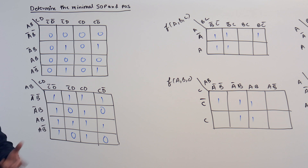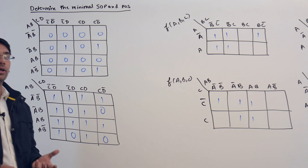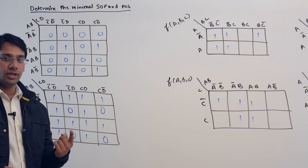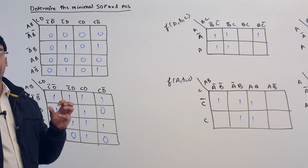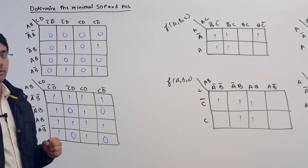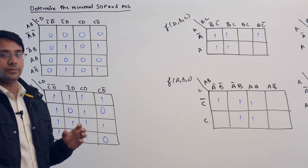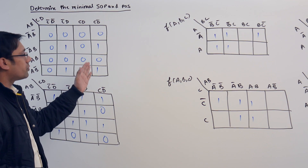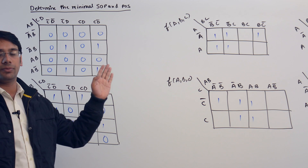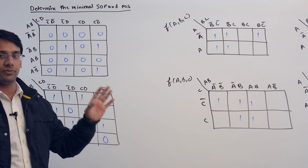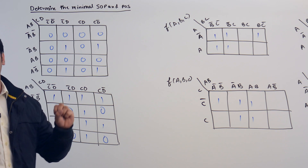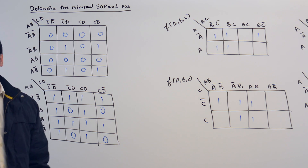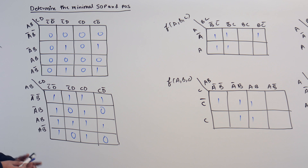Whenever we are finding SOP, that means we are going to take all the one terms. SOP is Sum of Product and POS is Product of Sum. Whenever we are finding POS, that means we are going to take all the terms which are having zeros.